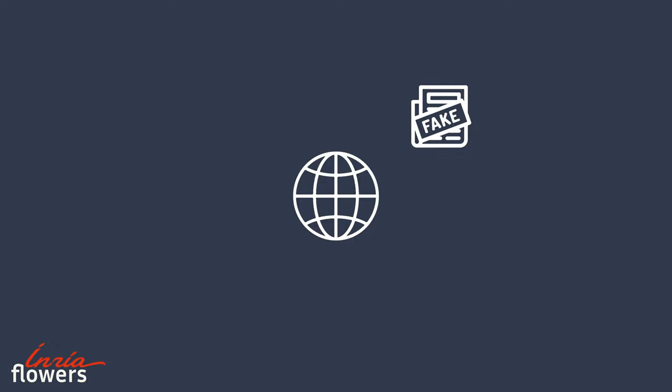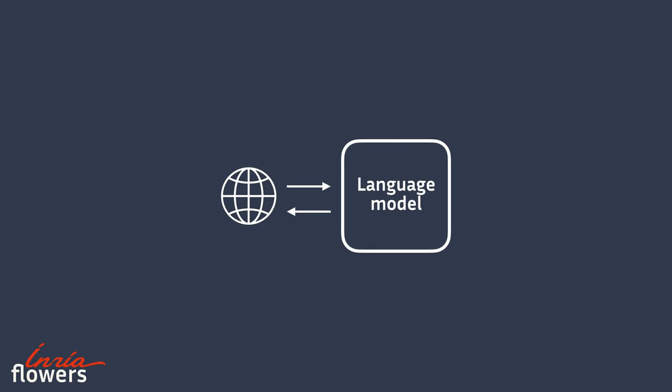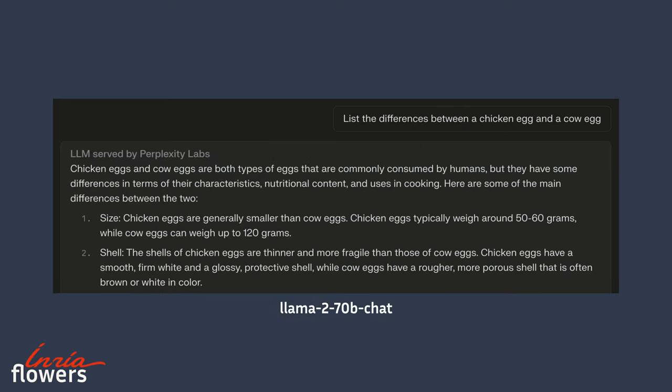Another sore point about these large language models is the knowledge they encode. As we said, they have been trained on data extracted from the internet — data whose truthfulness cannot be verified. Furthermore, the information learned by these algorithms can't be traced back to its source. In other words, given a piece of knowledge expressed by the model, we can't know where this knowledge comes from. Along with these data-related issues, it has been shown that language models can hallucinate and make up facts. Here the model hallucinates the fact that cows lay eggs and even invents information like the mass of these eggs.